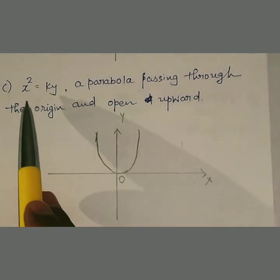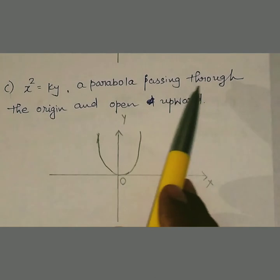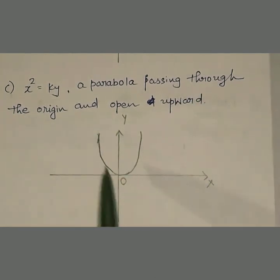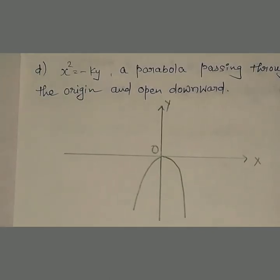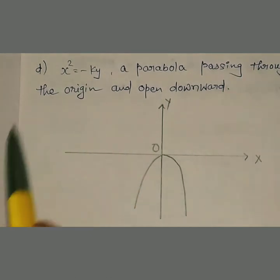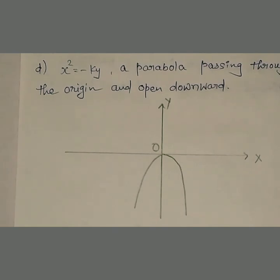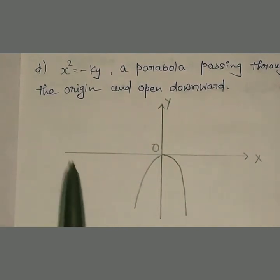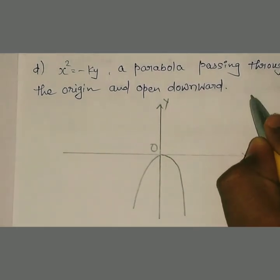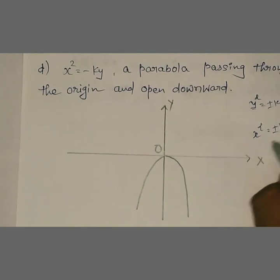Third characteristic of parabola: equation changes to x² = ky (positive) — parabola passing through the origin and open upward, यानि positive y-axis में। Fourth characteristic: x² = −ky (negative) — parabola passing through the origin and open downward। Total 4 parabolic equations possible हैं: either opening right/left (y² = ±kx) or opening upward/downward (x² = ±ky)।